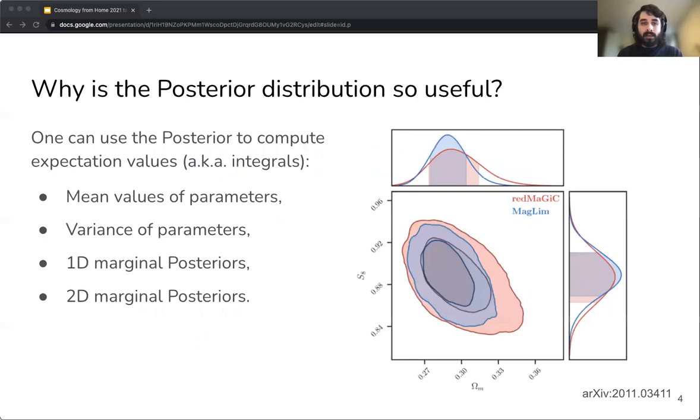In any case, Bayesian inference offers a consistent and general way of comparing our models to the observations in all of those cases. But what exactly is the posterior distribution and why is it so useful for astronomy and cosmology? The reason is that knowing the posterior we can compute multi-dimensional integrals such as expectation values. Those include mean values of parameters along with their respective uncertainty, or other things like the one and two-dimensional marginal posterior distributions which are often the main result of modern cosmological analysis. You can see for example here the DES one-dimensional two-dimensional marginal posteriors for omega matter and sigma 8.